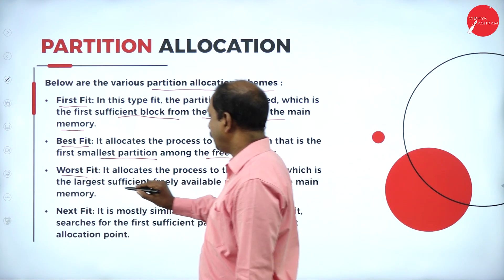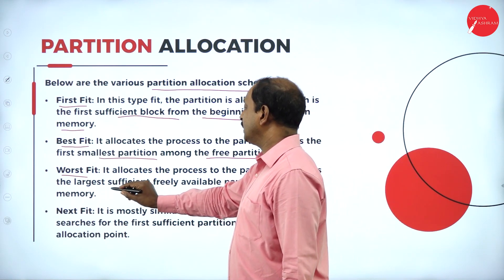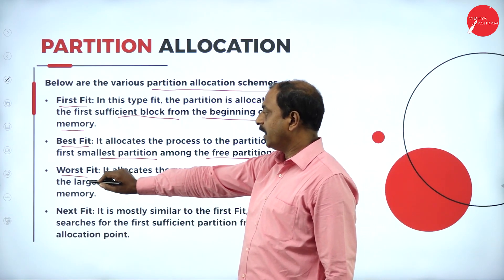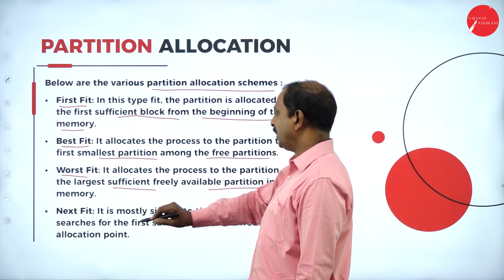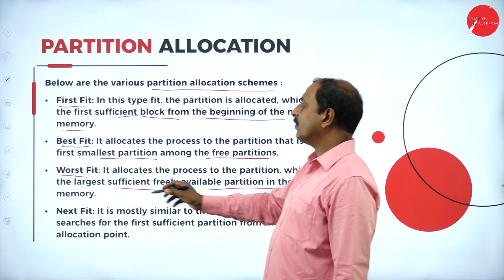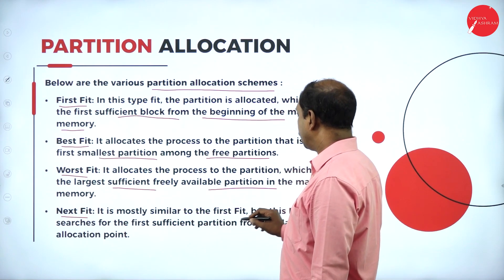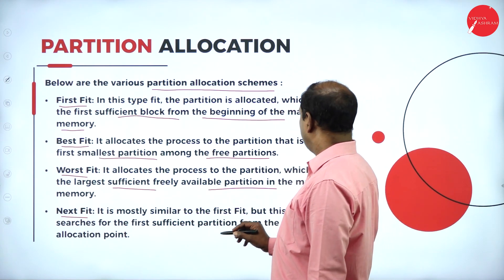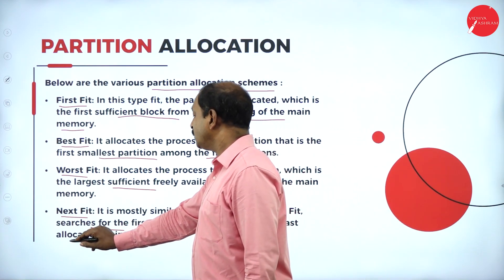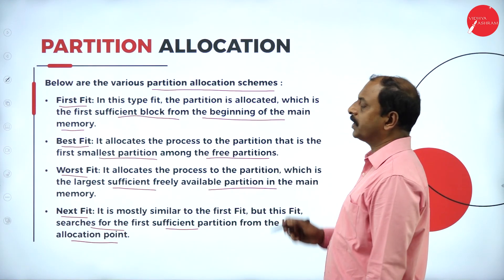The third scheme is worst fit, which allocates the process to the largest sufficient free available partition in the main memory. The processes are allocated to a partition which has enough space. The fourth scheme is next fit, which is mostly similar to first fit, but searches for the first sufficient partition from the last allocation point. These are the different schemes of partition allocation.